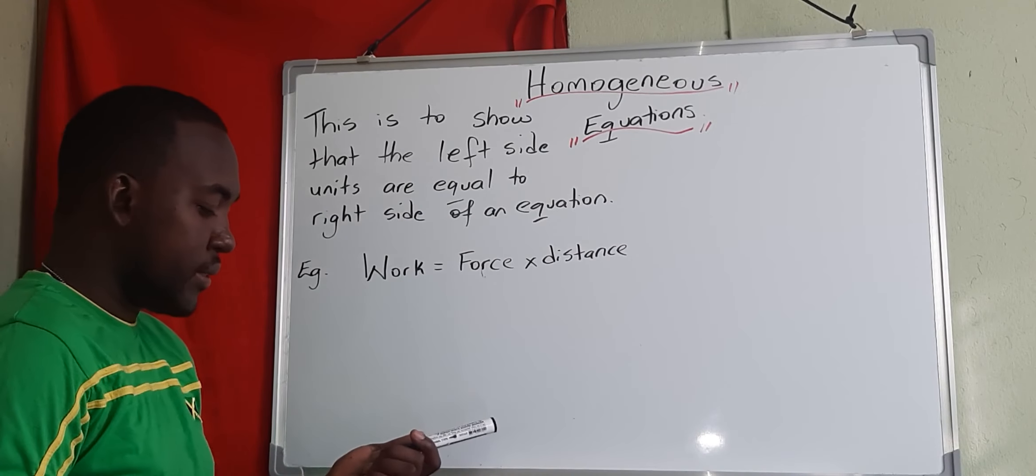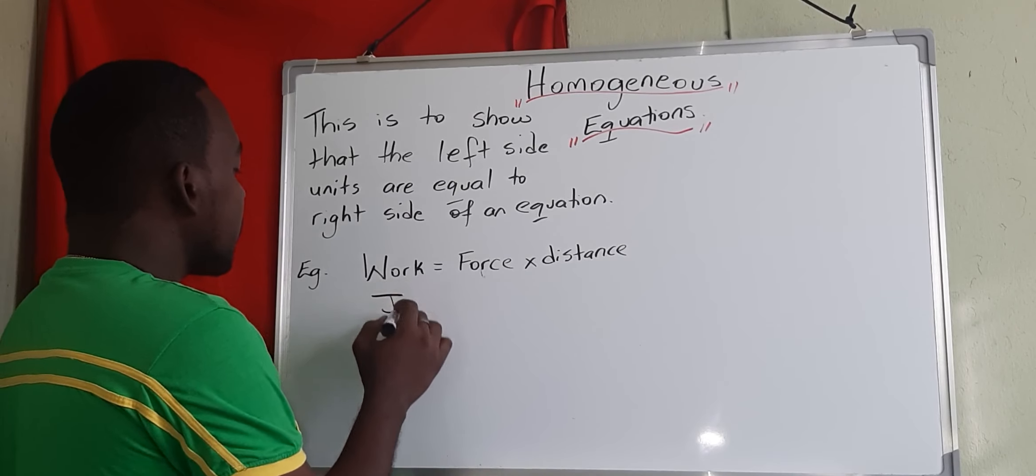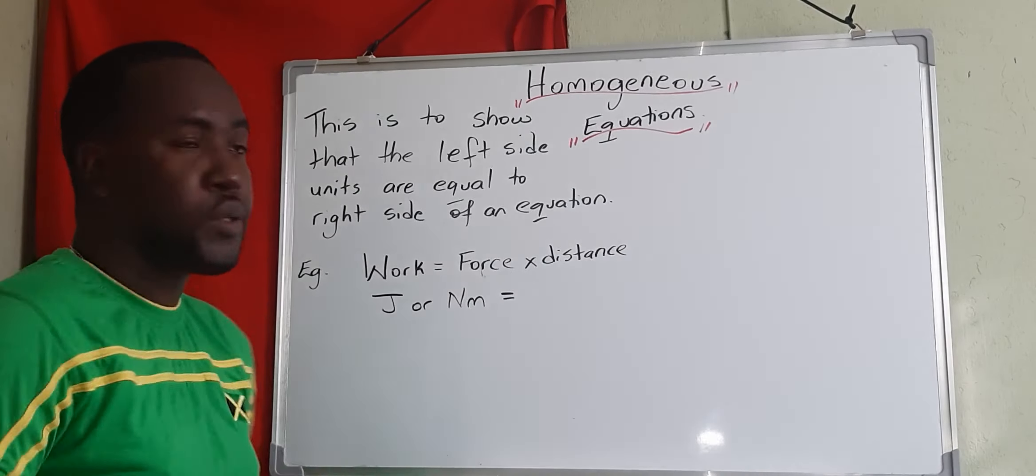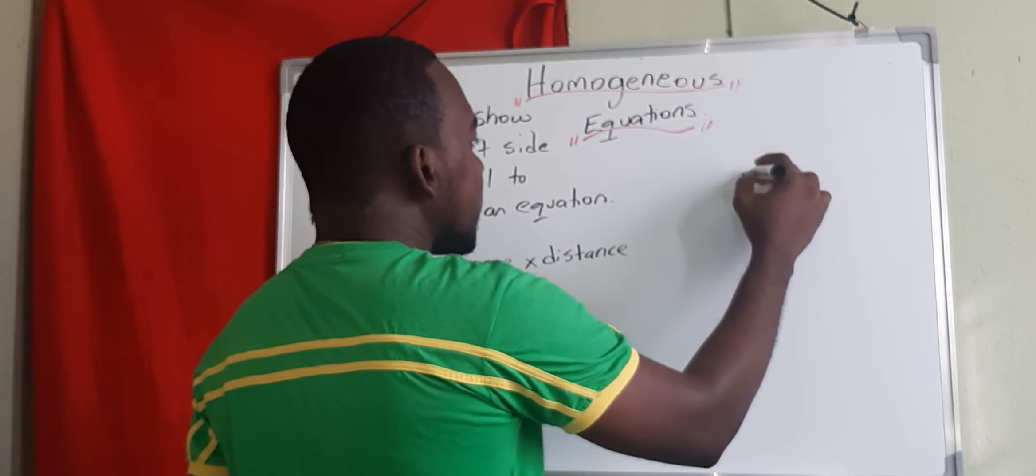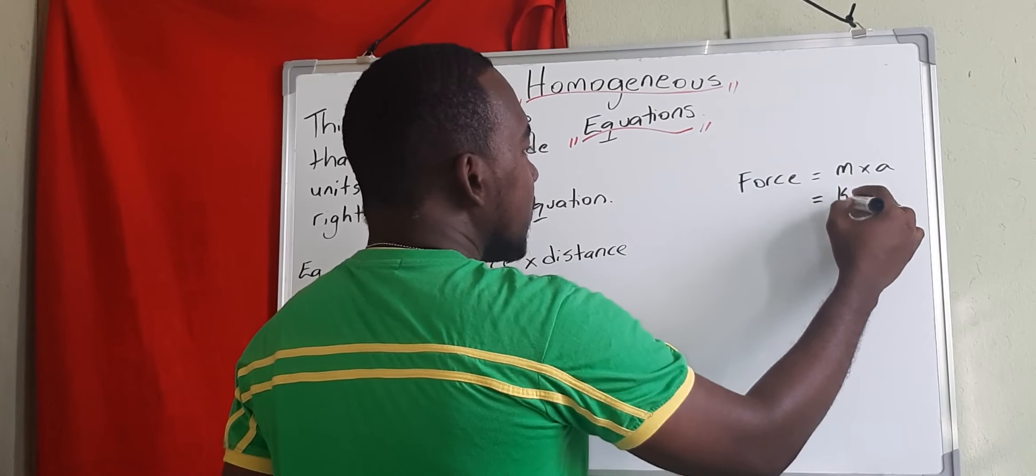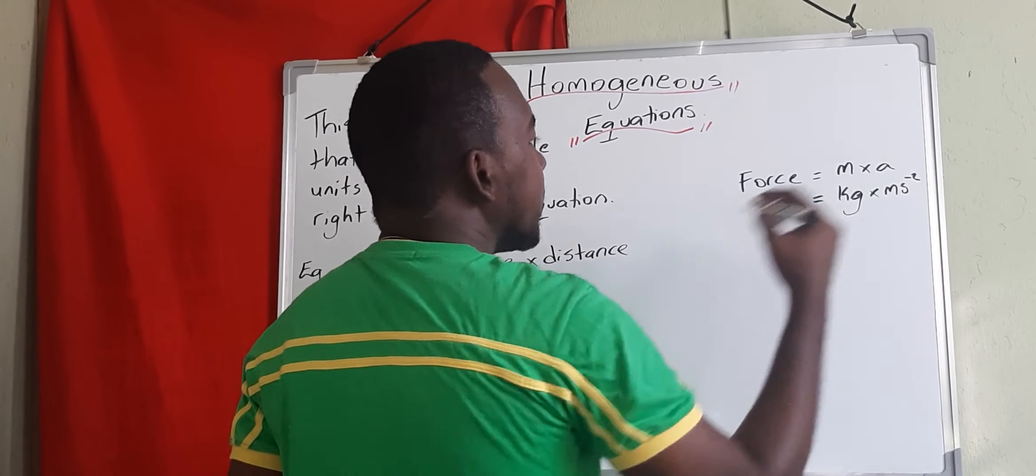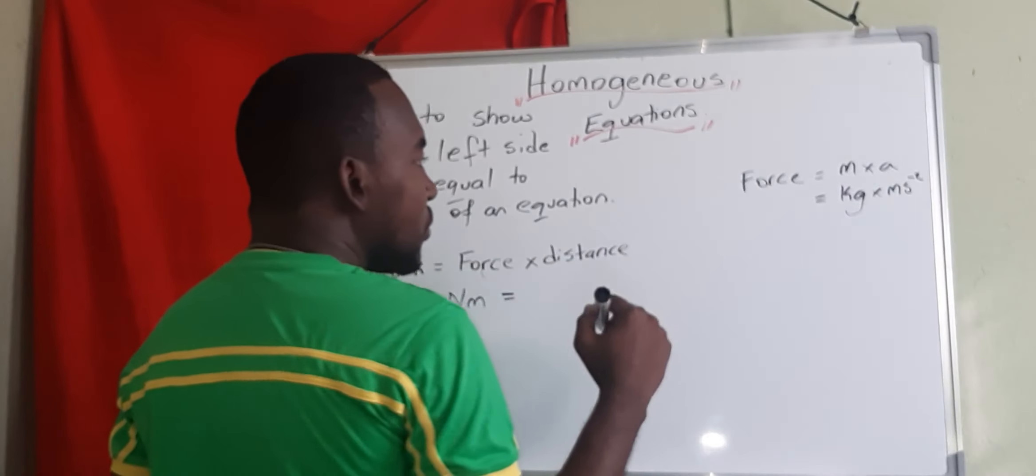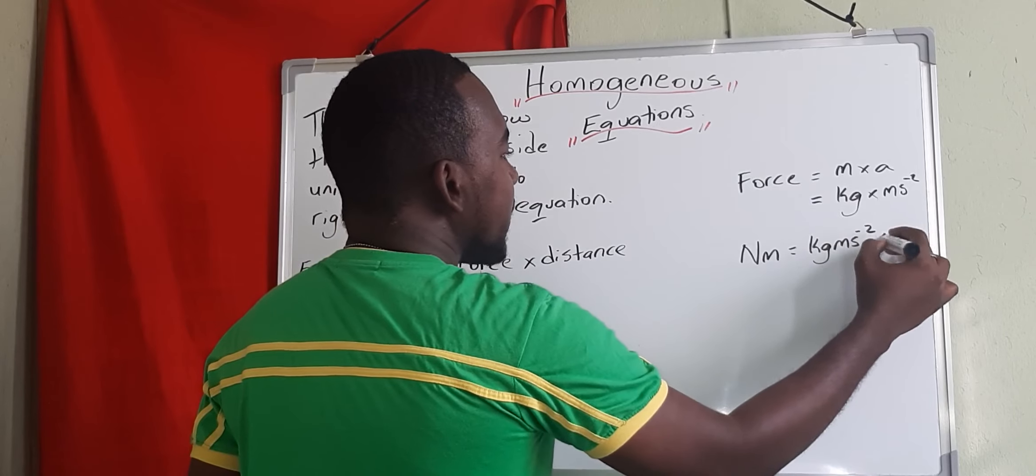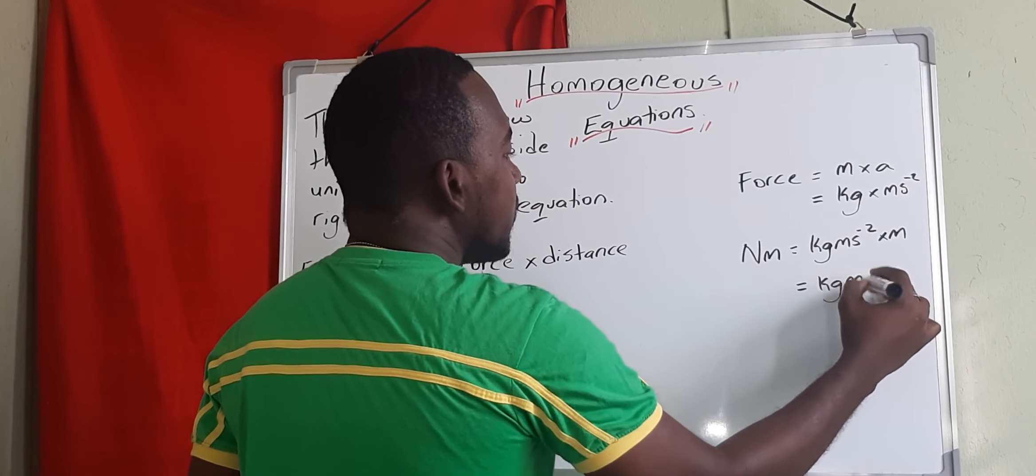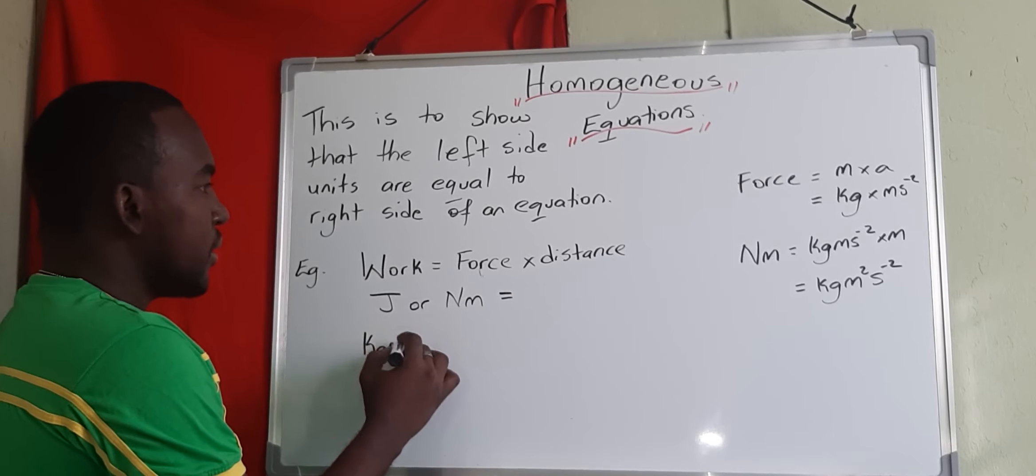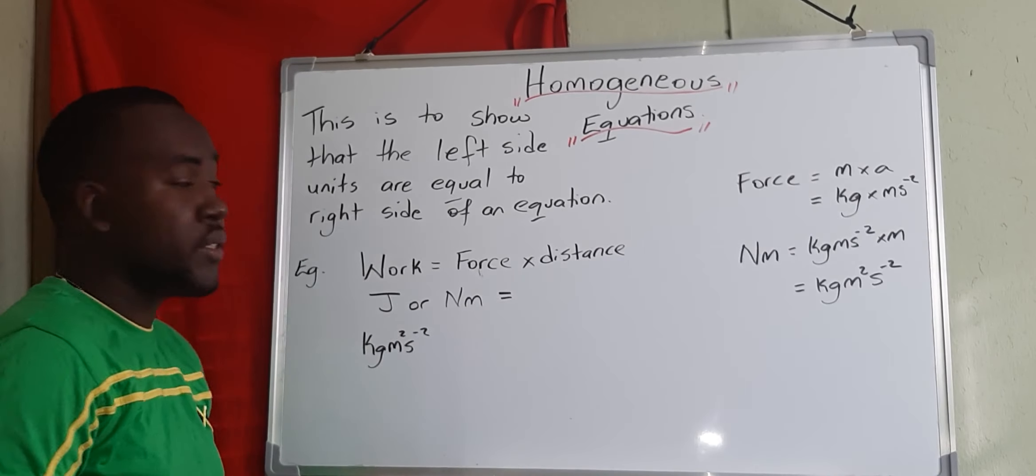We know for work, it is actually measured in joules, or Newton meter. So let's look at the base unit for the joule, Newton meter. Force is actually given by mass times acceleration. So the mass is in kilograms multiplied by acceleration in meters per second squared. So that is force, Newton, and then it's multiplied by m. Newton meter is actually Newton multiplied by m, so we get kilogram meter squared per second squared. So that is for work. Work is kilogram meter squared per second squared. That's the left side.